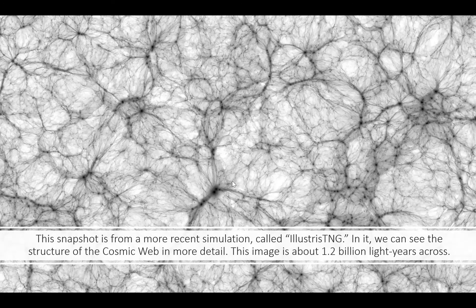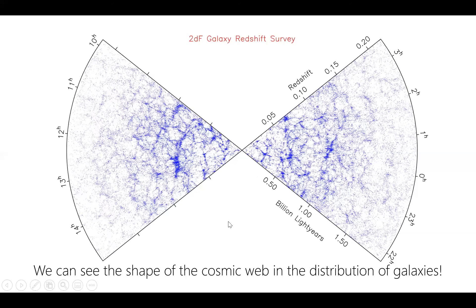One question at the core of a lot of astrophysics is: how did we get here? Where did the Milky Way come from? When you look at the big picture, this is the context that provides us clues to understand how the Milky Way formed and evolved. This is where the gas comes from that fuels star formation in the Milky Way and other galaxies.